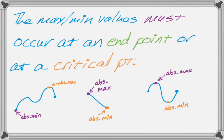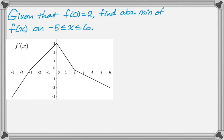So let's try to do a problem. So let's say that we're given that f of 0 equals 2, and we want to find the absolute minimum of f of x on the interval from negative 5 to 6. And you're given the graph of f prime shown kind of below the problem there. So this is a really common problem. Probably you'll have to do something like this on a free response question on the AP exam, if you're in AP calculus.